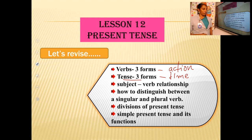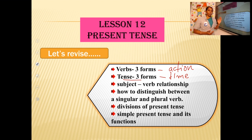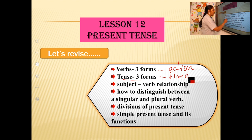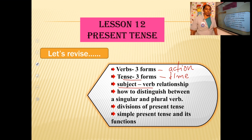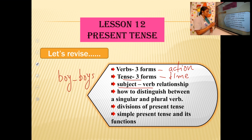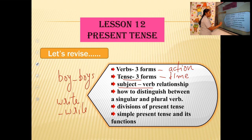Then we discussed subject-verb relationship. When a subject is singular, the verb should also be singular. If the subject is plural, the verb should also be plural. That is the subject-verb relationship. When you add -s or -es with a verb, it becomes singular, not plural.